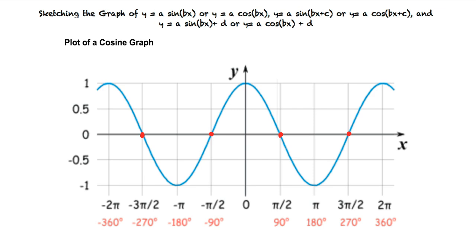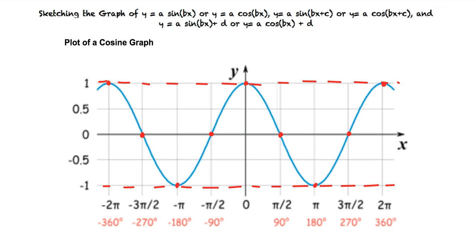Like the graph of sine, it has a maximum of one. However, unlike sine, the graph of cosine reaches this at negative two pi, zero, and positive two pi. It also has a minimum of negative one, which it reaches at negative pi and positive pi. Again, it is important to memorize this general structure of the graph, as it will help us sketch more complicated cosine graphs in the future.